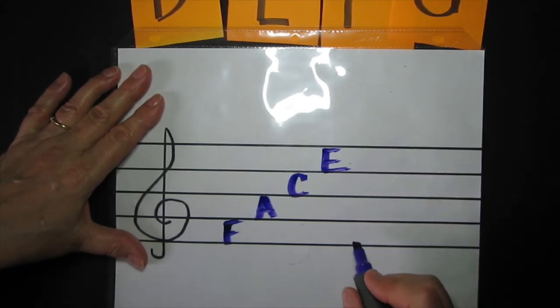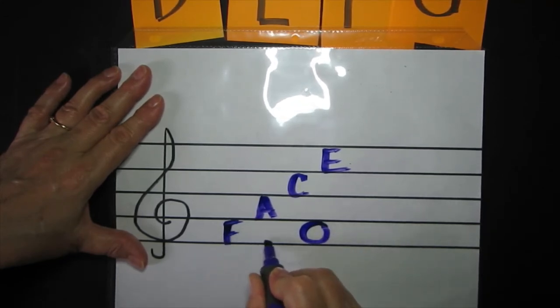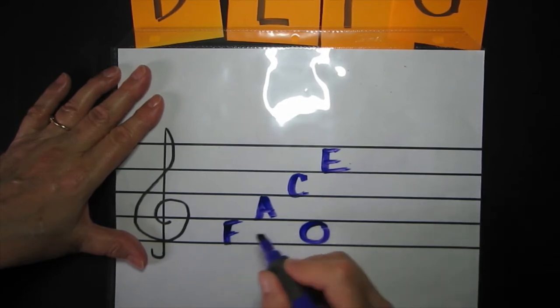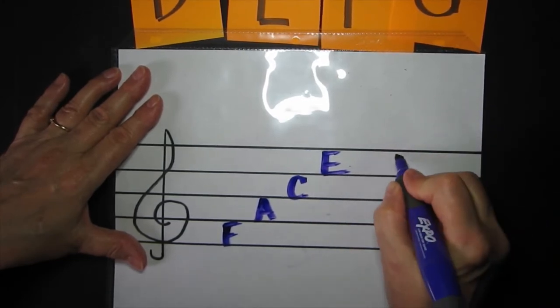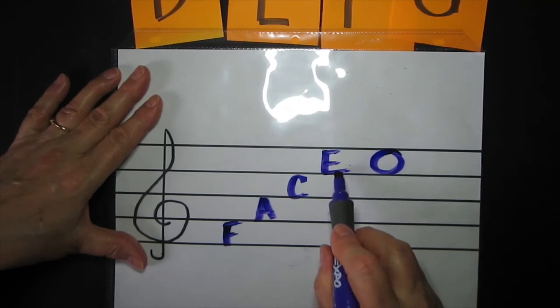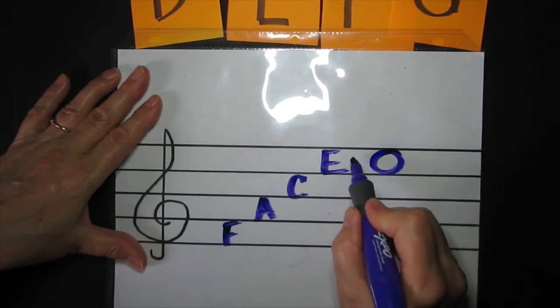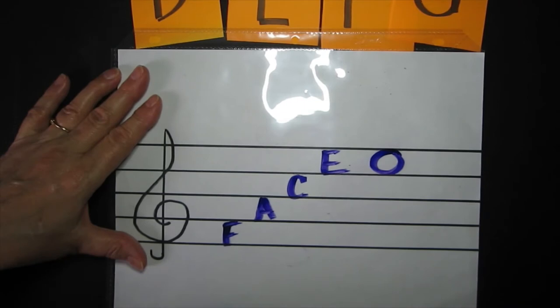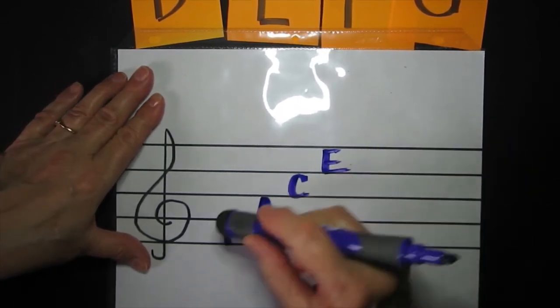Now as before, if we have a note in this space, this is in the F space, this is a whole note F. Now if I erase that and I put the notes in one of the other spaces, say up here, it becomes a whole note E. For wherever you have the note head, it takes on the name of the space. Or if the line's running through it, it takes on the name of the line. All right, now we're going to erase all this.